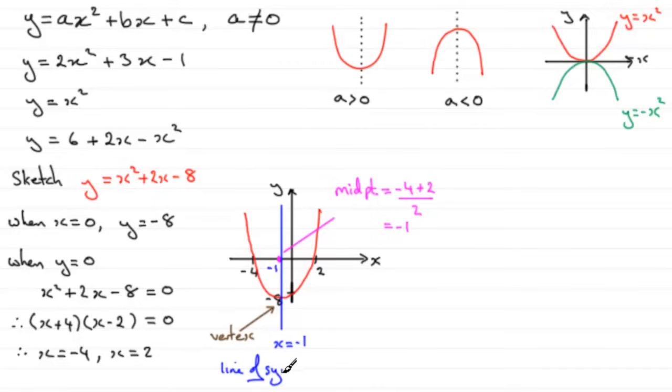And as for the coordinates of this vertex, all we need to do, we know the x coordinate is minus 1, we need to get the y coordinate. And we can put minus 1 through our equation here. So when x is minus 1, you're going to get minus 1 all squared, which is 1, plus 2 times minus 1, which is minus 2. 1 minus 2 is minus 1. And then minus another 8 is minus 9. So the coordinates of that vertex are going to be at minus 1, minus 9, just below the minus 8.